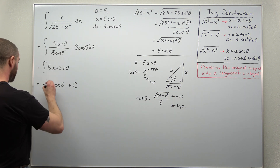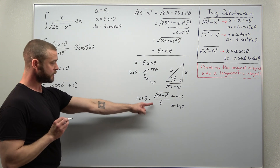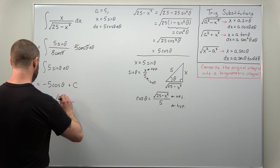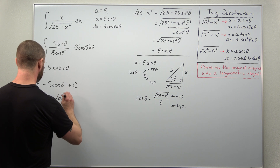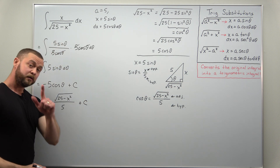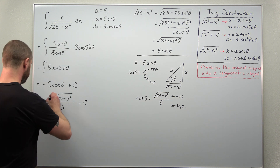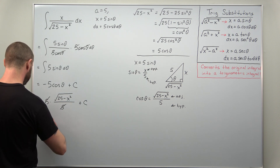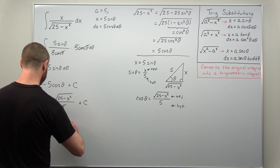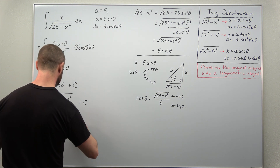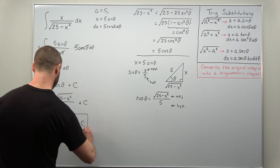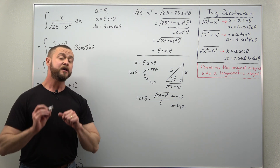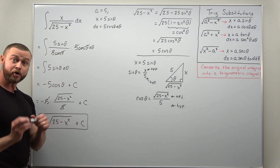Making that replacement in our antiderivative: we have a factor of negative 5, and cosine theta is replaced with the fraction (square root of 25 minus x squared) divided by 5. Don't forget the plus C. The factors of 5 cancel, and we get for our antiderivative: negative times the square root of 25 minus x squared. That is all the work for solving this integral using trig substitution — it includes all the standard steps.